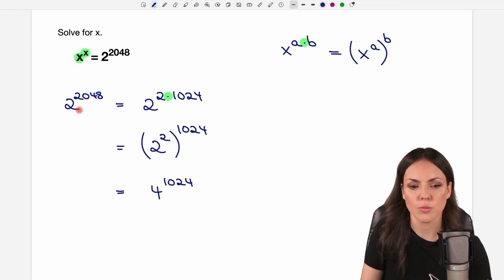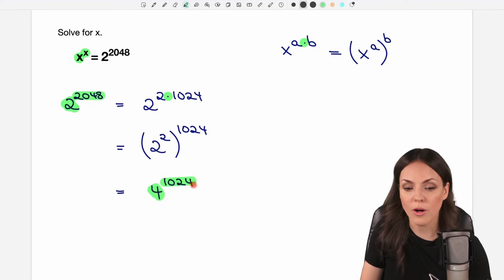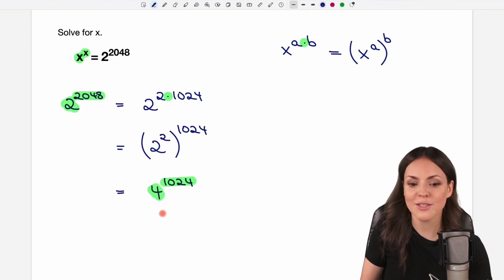So this is our expression now. And if we compare it with the expression we came from, here we had a very small base and a very large exponent, and now the base became larger and the exponent became smaller. Our goal is that the base and the exponent are going to be the same number. That's not yet the case, so let's repeat this process.